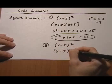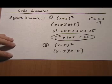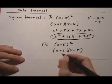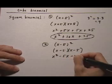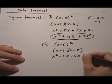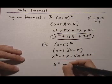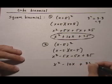We FOIL it out: x² - 5x - 5x again + 25. Collecting like terms gives us x² - 10x + 25.